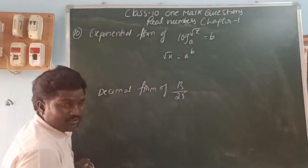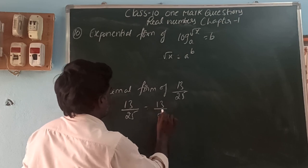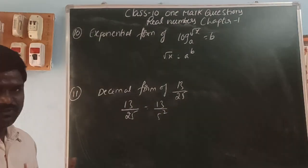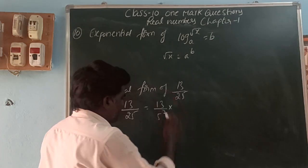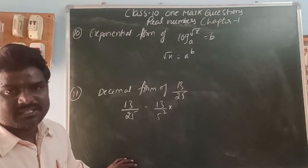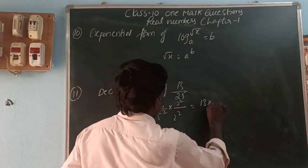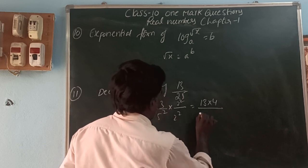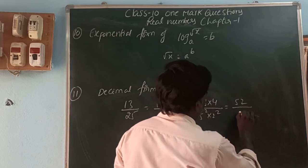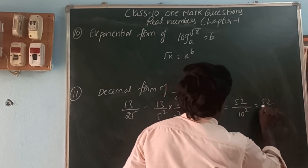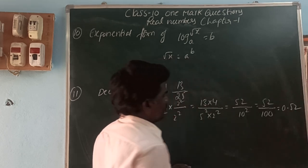Find the decimal form of 13/25. We write 25 as 5². To make the denominator a power of 10, we multiply by 2². That is (13 × 4) / (5² × 2²) = 52/10² = 52/100. Since there are 2 zeros, we get 2 decimal places. So the answer is 0.52.